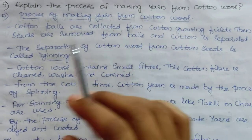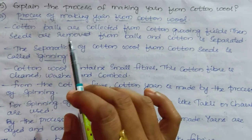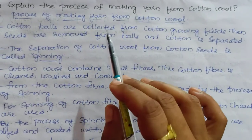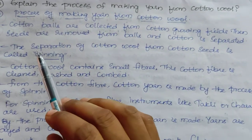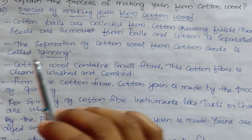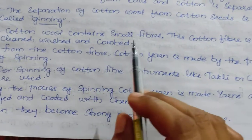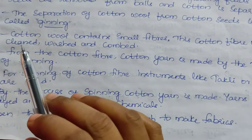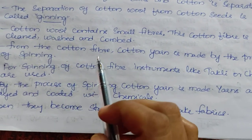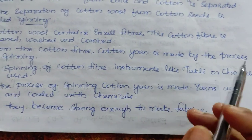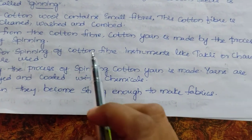Fifth question: explain the process of making yarn from cotton wool. Cotton balls are collected from cotton-growing fields, then seeds are removed from the balls. This process is called ginning. The separation of cotton wool from cotton seeds is called ginning. Cotton wool contains small fibers, which are cleaned, washed, and combed.